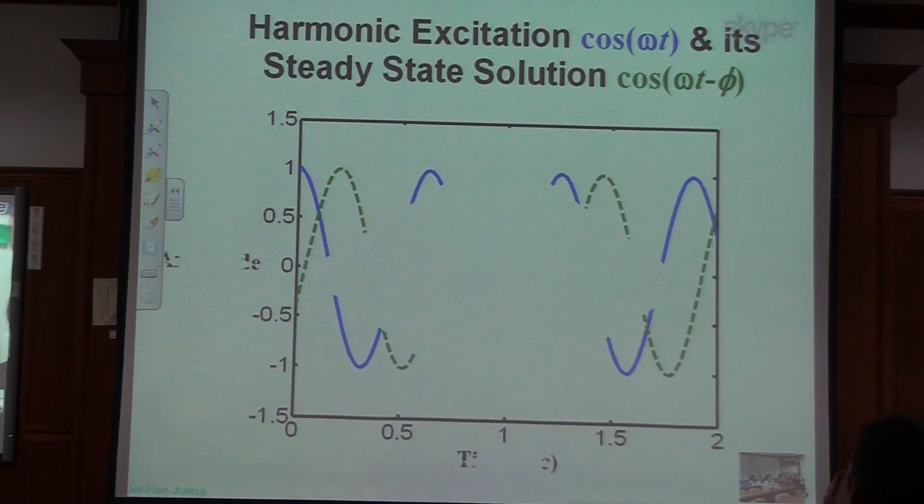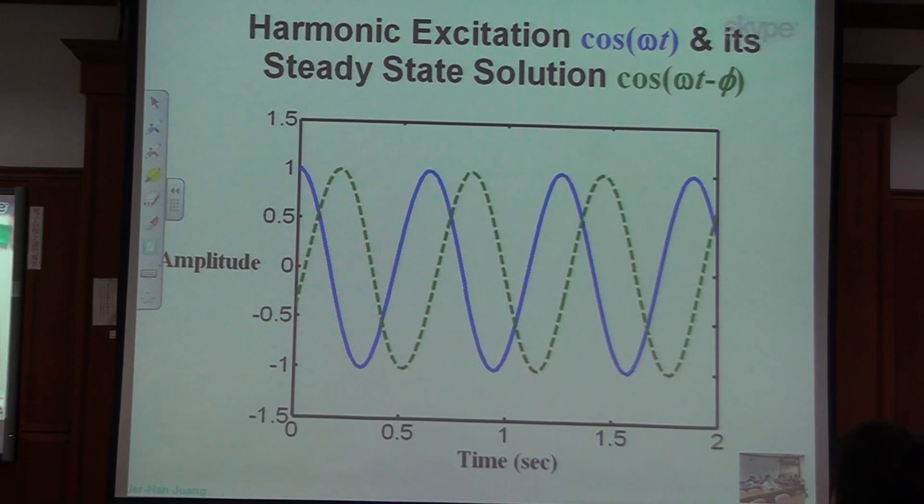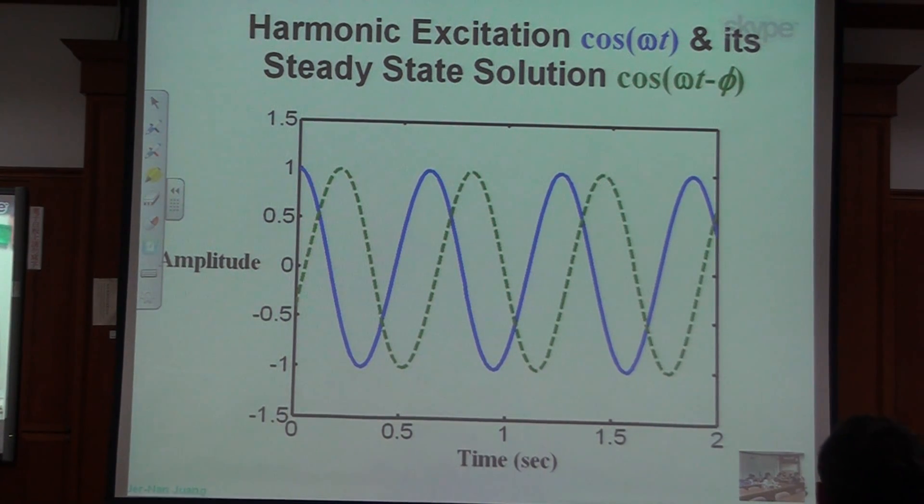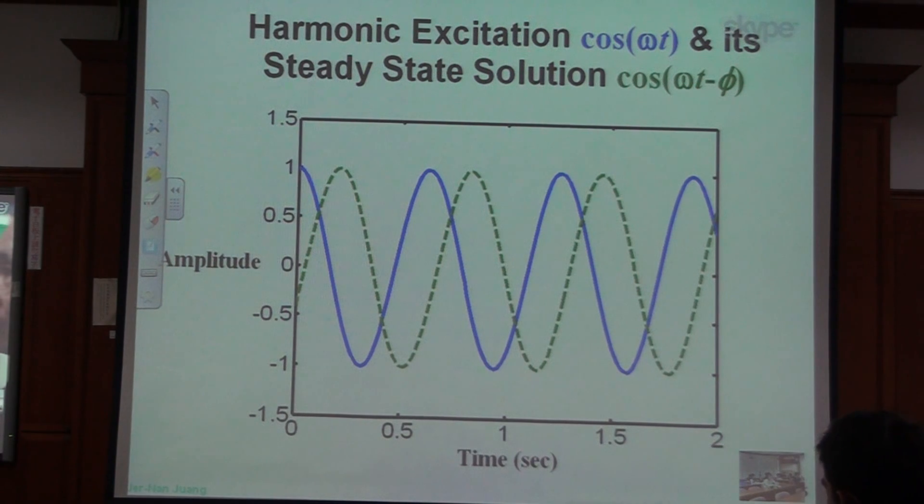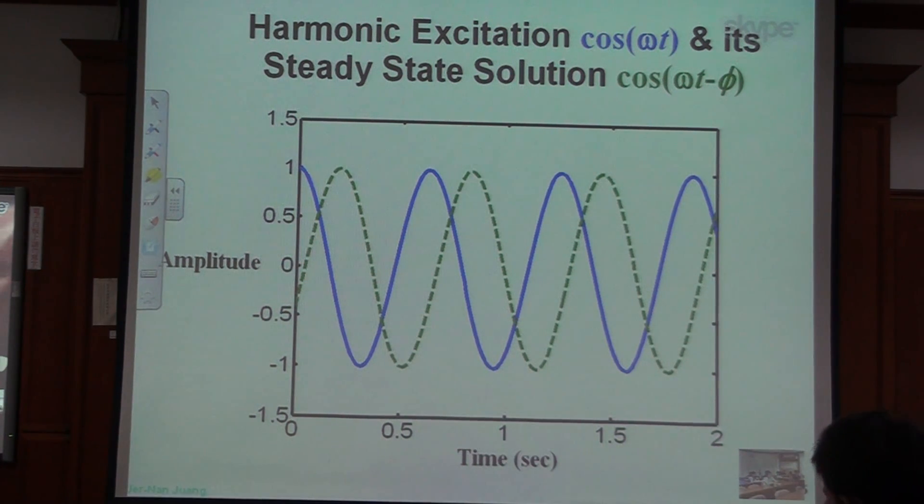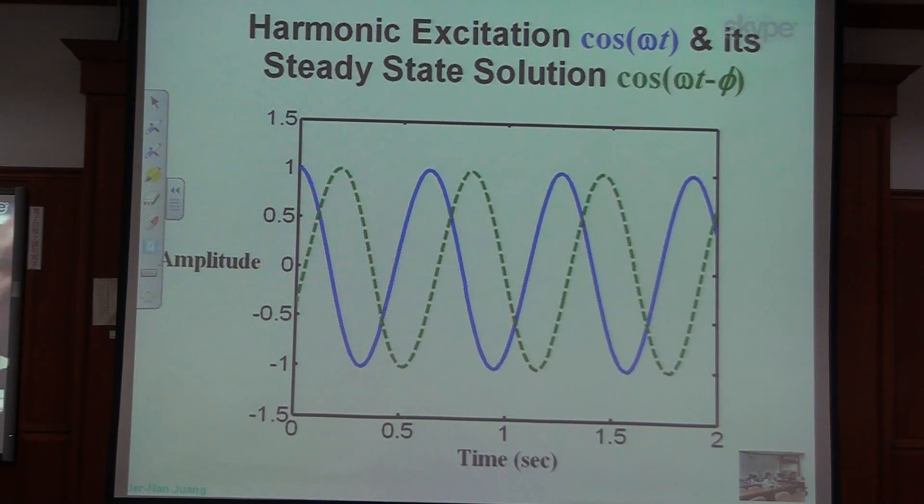Okay, now this is showing the delay. The blue line is the original harmonic excitations. The green line is your steady state solution. You can see that when input will come in, your system won't feel as quick as the input come in.